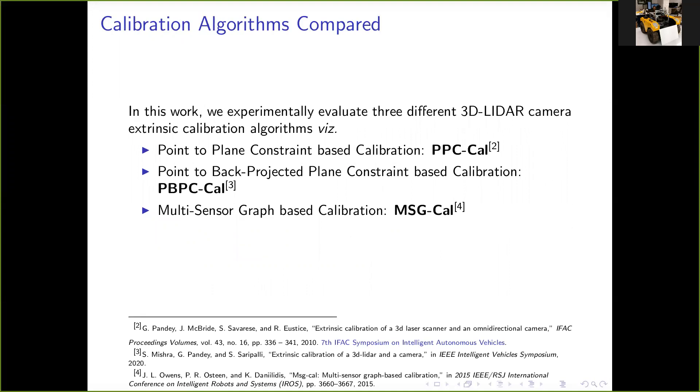In this work, we compare three different 3D LIDAR camera calibration algorithms, namely: the point-to-plane constraint-based calibration, PPC-Cal, which does pairwise calibration of LIDAR camera pairs using a point-to-plane distance minimization constraint. The point-to-back-projected plane-based calibration, PBPC-Cal, which does pairwise calibration of LIDAR camera pairs using a point-to-back-projected plane distance minimization constraint. And finally, the multi-sensor graph-based calibration, MSG-Cal, which uses point-to-plane constraints for pairwise calibration, and on top of that, it adds an additional layer of joint graph-based optimization for multi-sensor systems. The details of all these algorithms can be found in the cited papers.